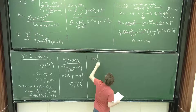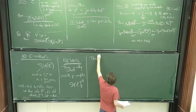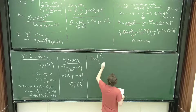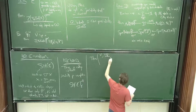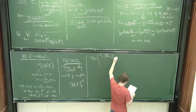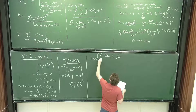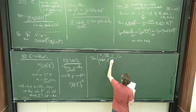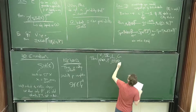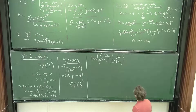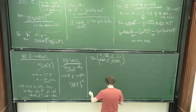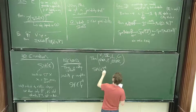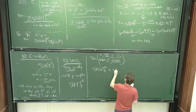Theorem — attributed to Voevodsky, Dundas-Röndigs-Østvær, Isaacson, Levine, Gheorghe, Gheorghe-Wang-Xu, Shukowski, and Gheorghe-Isaksen-Krause-Ricka — who all played their part in verifying the following: this category — cellular, P-complete C-motivic spectra — is a one-parameter deformation. By this I mean there is a symmetric monoidal functor from filtered spectra into this category.